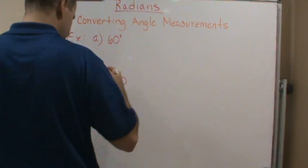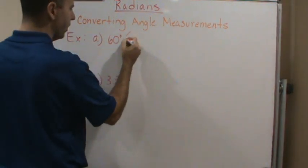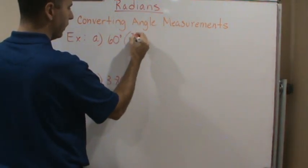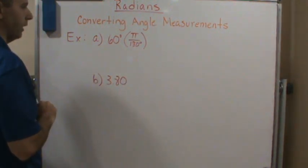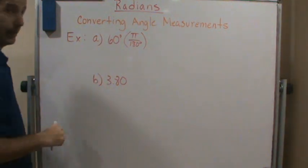So let's convert. So now 60 degrees, we're going to multiply this by pi over 180 degrees. And again, it's typically pi radians.